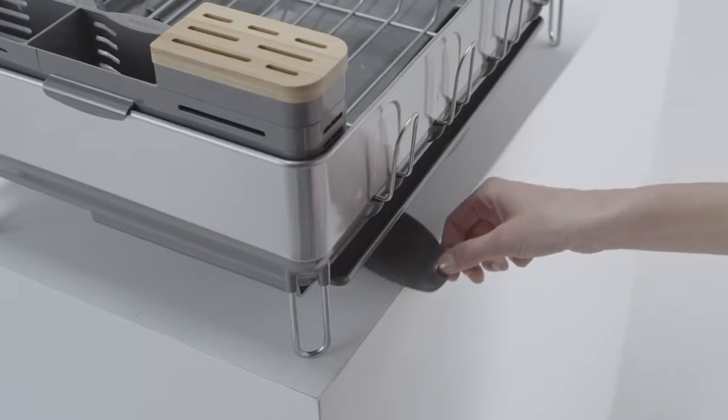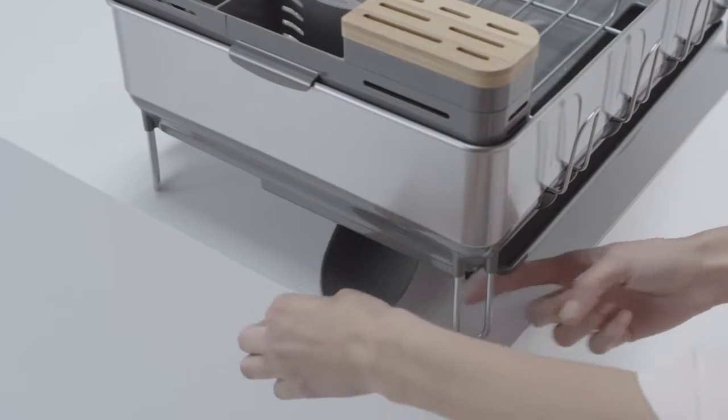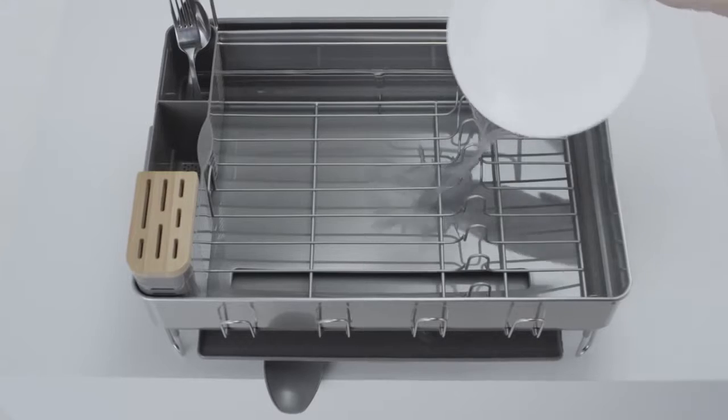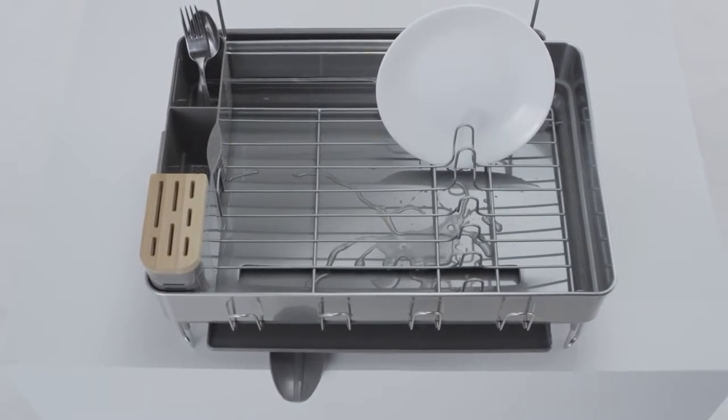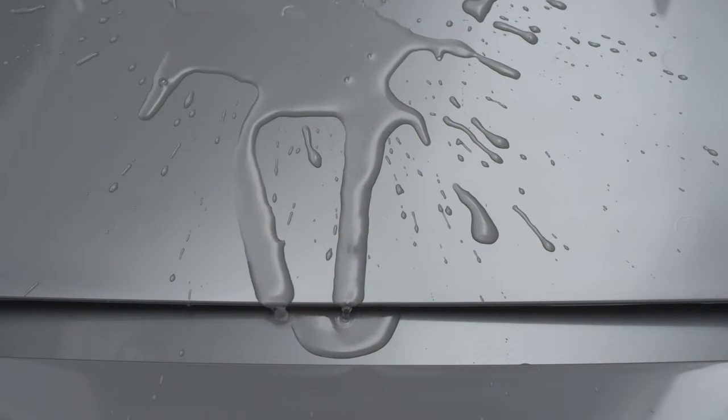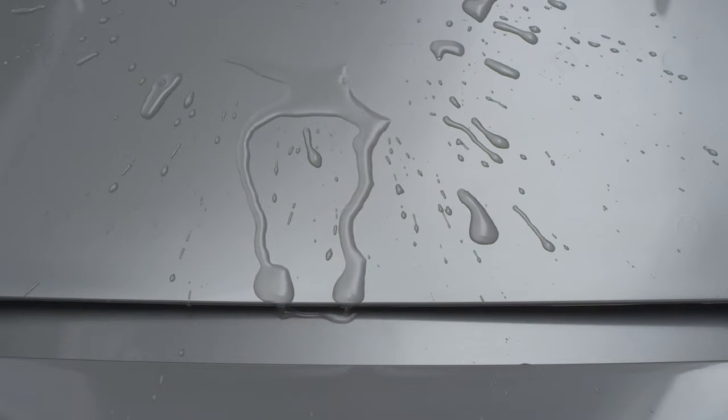And you can move the spout to reposition the dish rack, whatever suits your space. Quick drying means less chance of watermarks or mildew, so the plastic parts have a coating that forces water to spread on their surface so it dries more quickly.